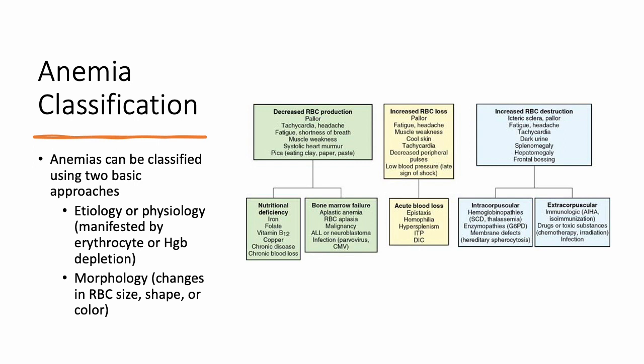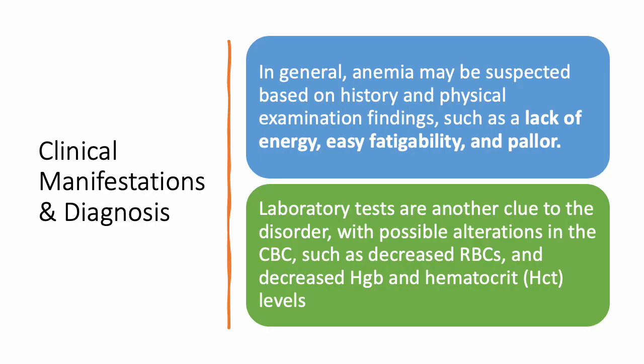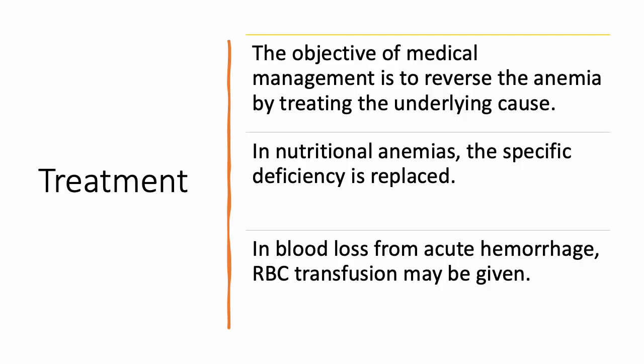You can classify anemias in a lot of different ways, but in general, as far as etiology goes, you can classify them by either decreased production of red blood cells, increased loss of red blood cells, or increased destruction. We'll talk about a few of the conditions coming up here in a moment. In general, you should suspect anemia any time that a patient has a lack of energy, easy fatigability, or pallor. These should all be red flags to get their CBC checked.